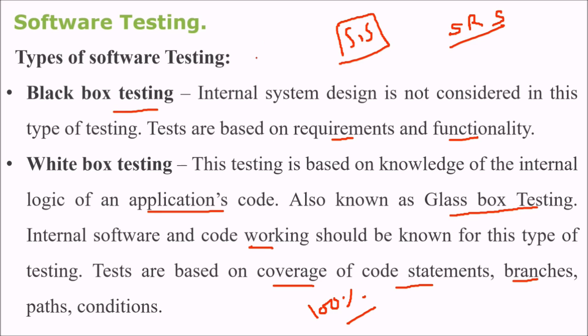For example, if I make a graph, I want to check each line and all the independent paths. We want to check all the independent paths in white box testing.